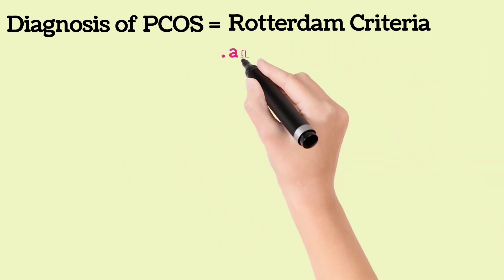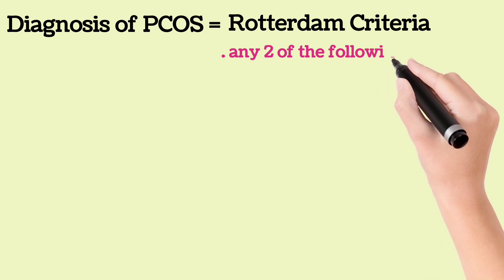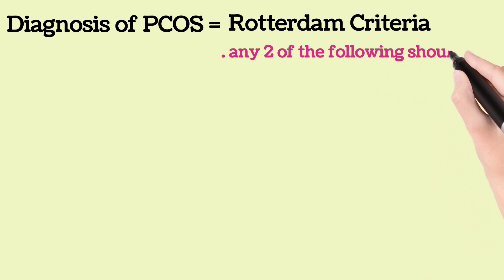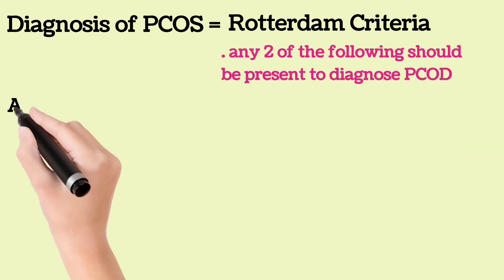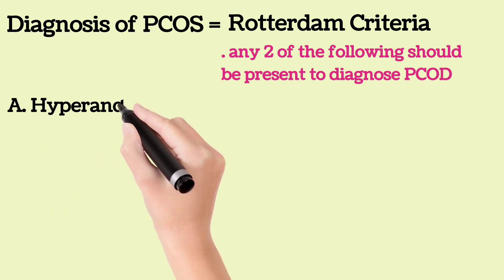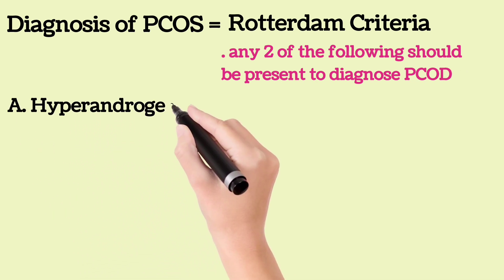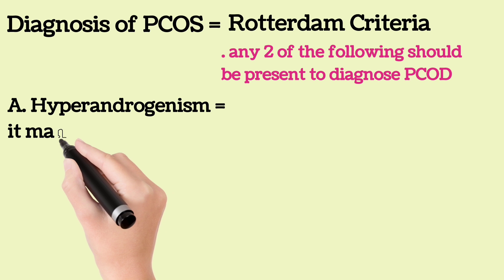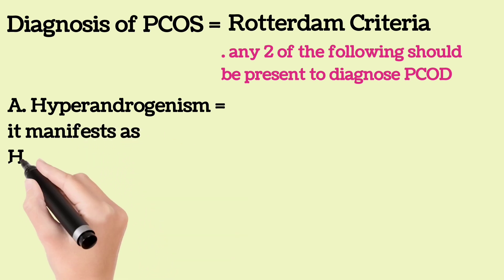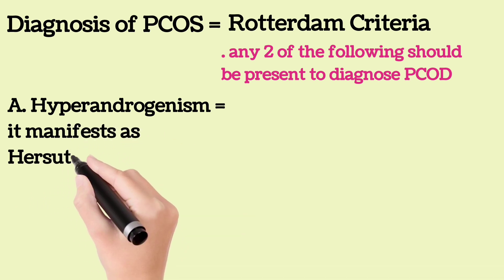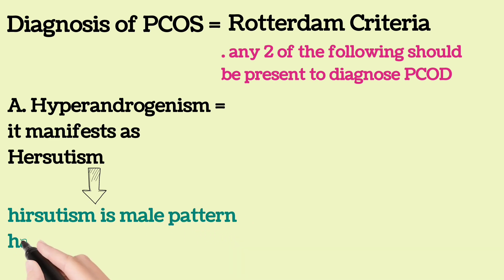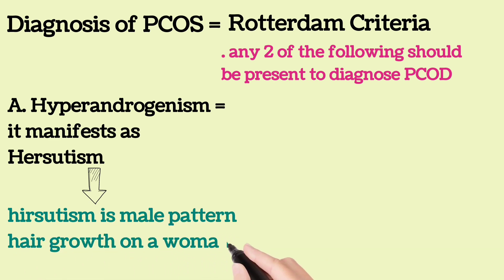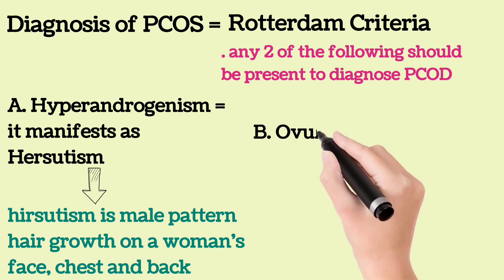Diagnosis of PCOS is made by the Rotterdam criteria, which states that any two of the following should be present to diagnose PCOS. First, hyperandrogenism, which manifests as hirsutism — male pattern hair growth on a woman's face, chest and back.